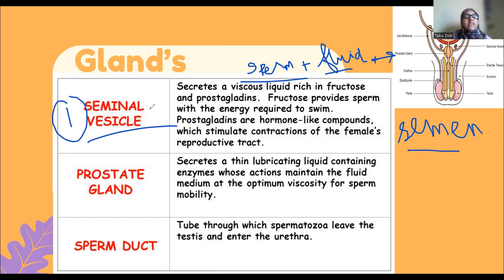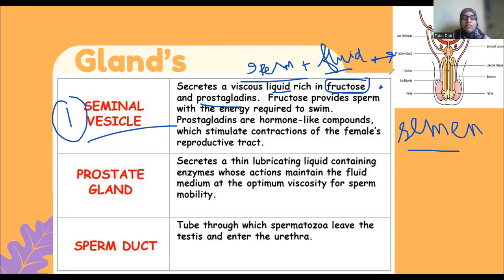The seminal vesicle secretes a fluid rich in fructose and prostaglandins. You will not find fructose elsewhere in the body in monosaccharide form — the readily available sugar in the body is glucose. Fructose is specifically present in the male reproductive system, that is in the semen.